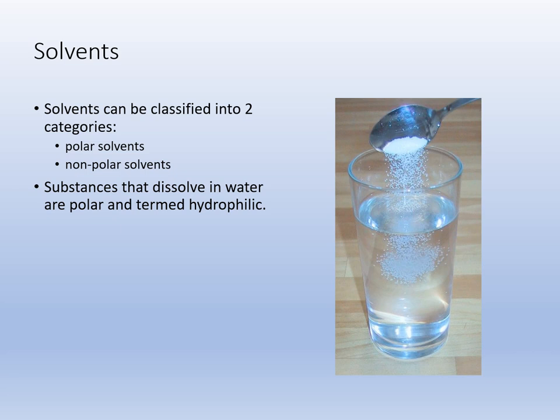Polar solvents generally involve something dissolved in water — the liquid is polar and the salt dissolves. A non-polar solvent would be something like turpentine or nail polish remover; it dissolves non-polar substances. Fats, oils, and waxes are non-polar — they would break down in a non-polar solvent but not in a polar solvent. Something that dissolves in water is called hydrophilic. Something that doesn't dissolve in water is called hydrophobic. Those terms will come up when we talk about cell biology later in this class.